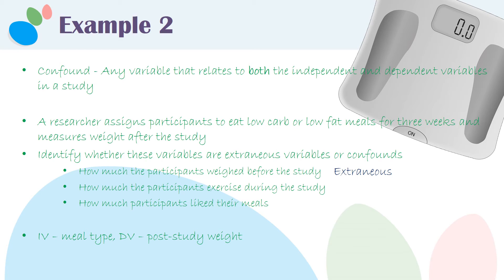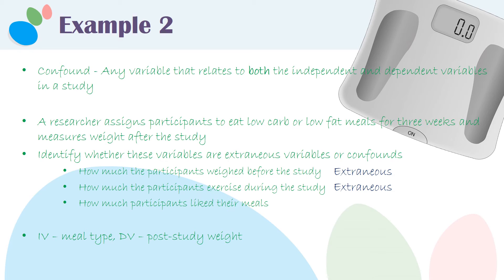Now let's talk about how much the participants exercised during the study. Is it going to be related to the randomly assigned meal type they got? No. But it is going to be related to their post-study weight. So this is another example of an extraneous variable and not a confound.